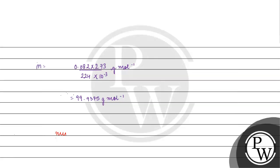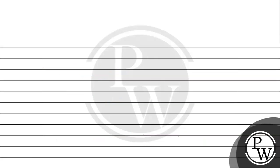We know that number of moles equals mass divided by molecular mass. Molar mass equals number of molecules divided by Avogadro's number. If we consider one molecule, the mass of one molecule equals the molecular mass of 99.9375 gram per mole, for one molecule, divided by Avogadro's number 6.022×10²³ mole inverse.